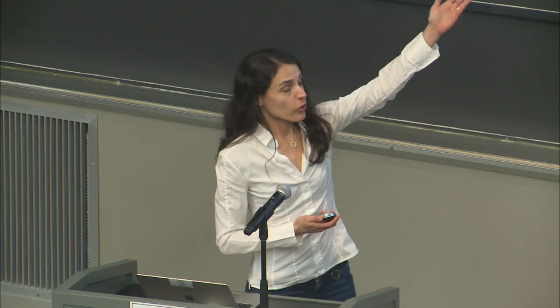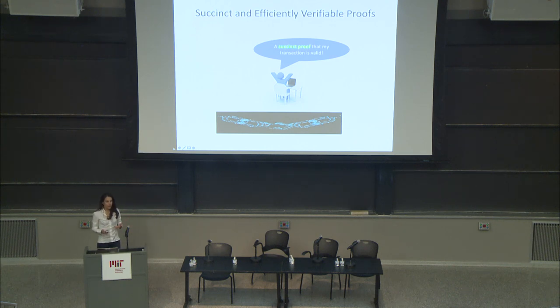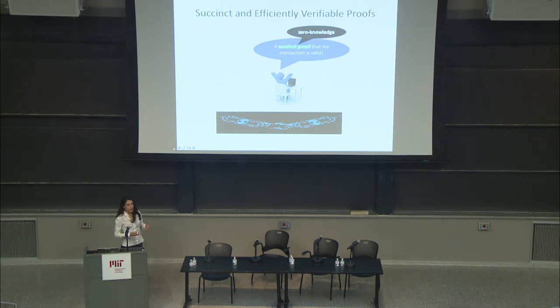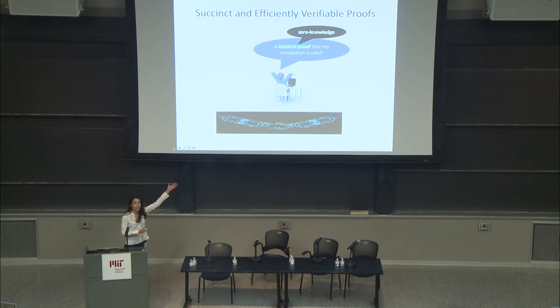Here is the problem that people want to solve. Suppose there are users in the blockchain and they want to prove that their transaction is valid. Why do we need these proofs? One reason is that some cryptocurrencies want to ensure privacy. When you want to ensure privacy, you want to hide everything and provide what's called zero knowledge proofs — proofs that convey no information beyond the fact that you did what you were supposed to do, for example, that your transaction is valid.